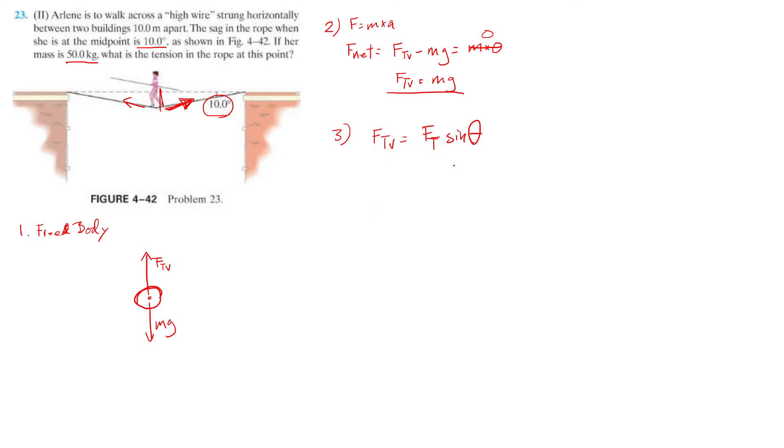So let's start kind of plugging in. We know that FTV is basically the same as mg. So I'm going to just rewrite that. mg is equal to Ft sine theta. So I want to find this tension. So let's divide both sides by sine theta. So Ft is equal to mg divided by sine theta.